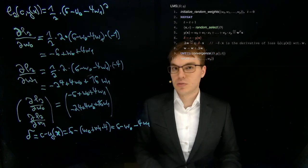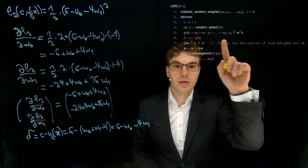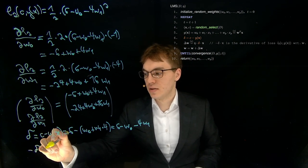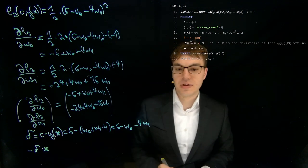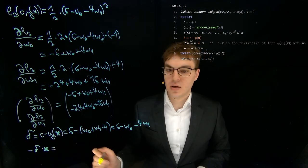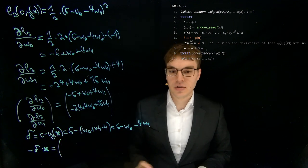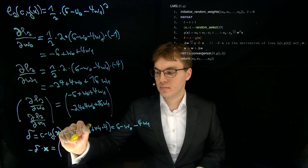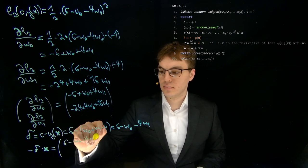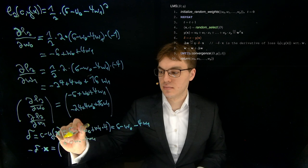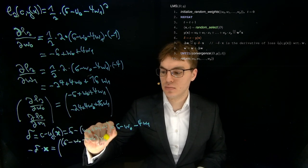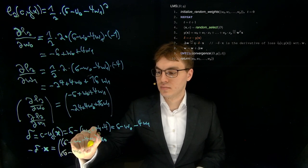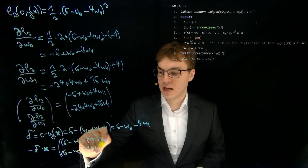And now we need to multiply this with the vector of X. So minus delta times the vector of X. And now this is element-wise. We get another vector again with two components. So we get this over here. Multiply it with X zero. And the same thing again multiplied with X one.